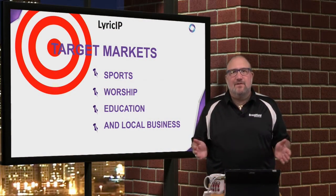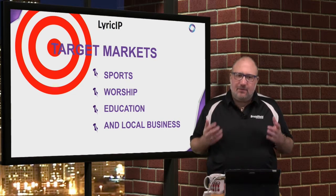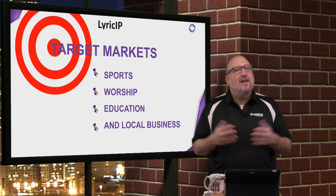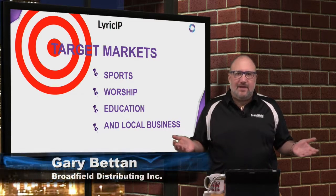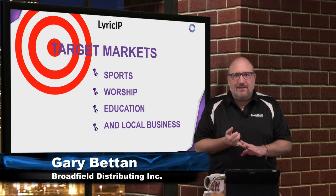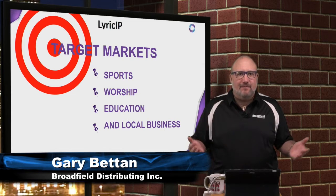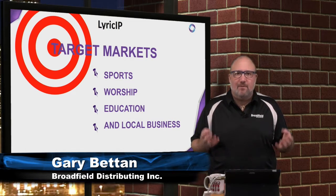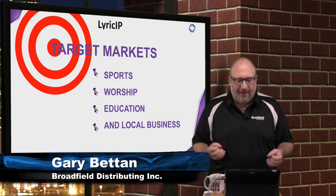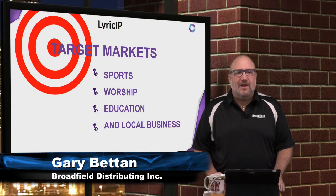Now that you've learned more about Lyric IP, let's talk about the markets we see it going into. Obviously, anyone who has a TriCaster professional-level installation — a 460, 860, or 8000 — you could certainly pitch this product to them. At $15,000, it's a way to bring in incredible professional-level broadcast graphics. Your existing install bases of TriCasters are really going to be receptive, but let's also talk about who you can pitch to in order to sell a new unit.